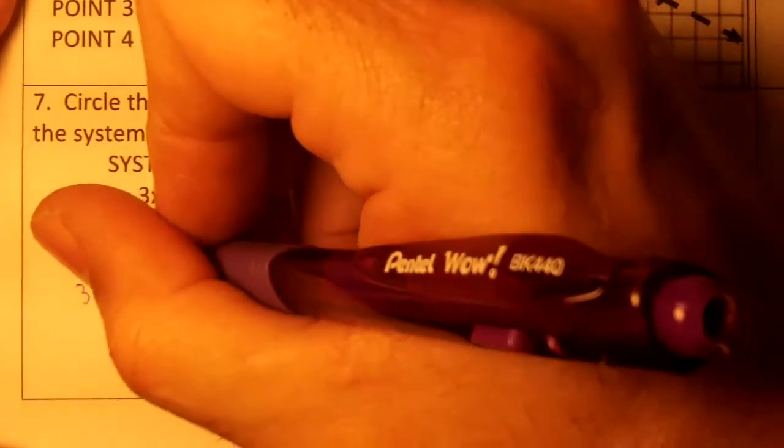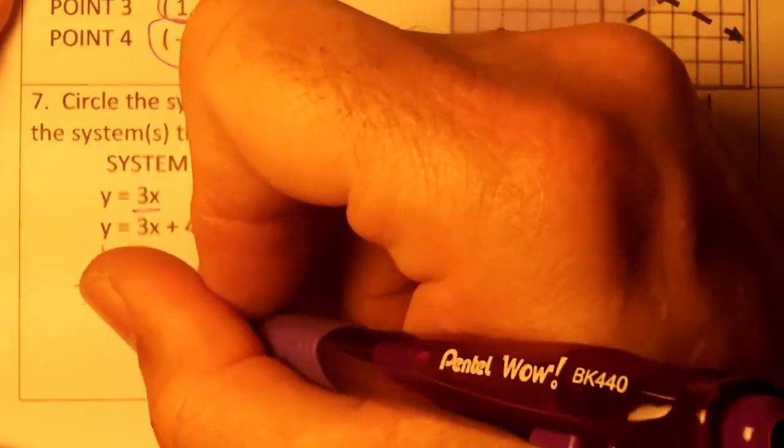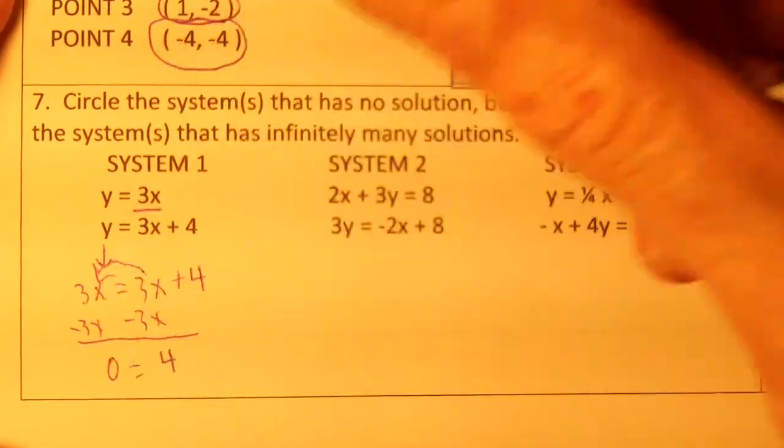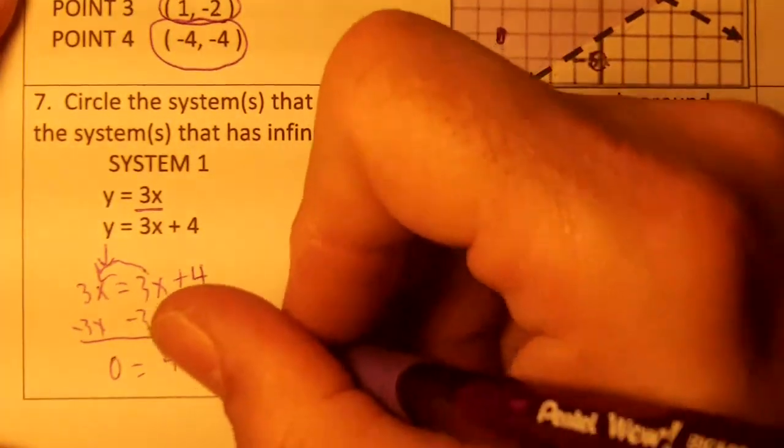I'm going to take this 3x and move it across. I'll get 0 equals 4. That's false, so it has no solution.